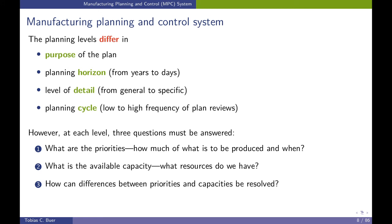At each planning level, the same three questions are answered. First: what are the priorities — how much of what is to be produced, and when? Second: what is the available capacity — what resources do we have? Third: how can differences between priorities and capacities be resolved? Typically, priorities and capacity are not in balance.